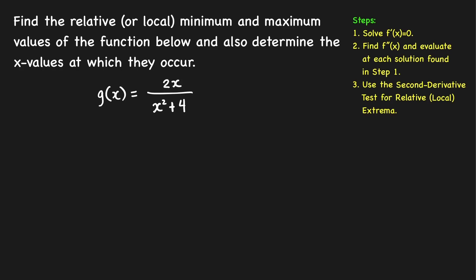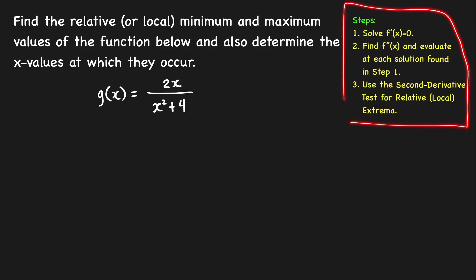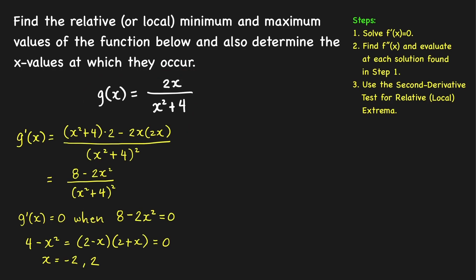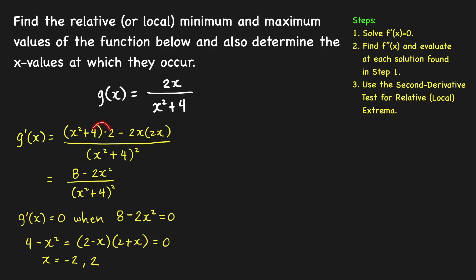Second example: let's find the local extrema of this function using the second derivative test, following the same three steps. For step one, we find the derivative using the quotient rule. The derivative is the denominator times the derivative of the numerator, which is 2, minus the numerator times the derivative of the denominator, which is 2x, all over the square of the denominator. Simplifying the numerator, we get 8 minus 2x squared.